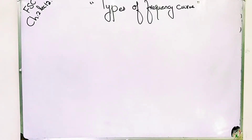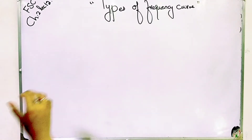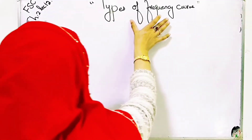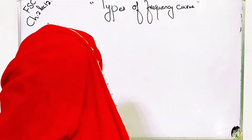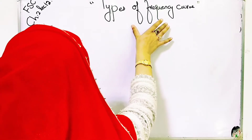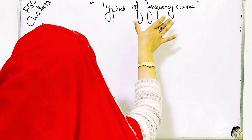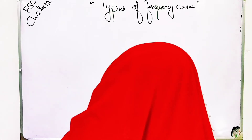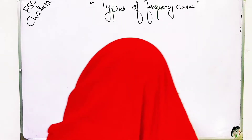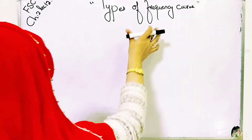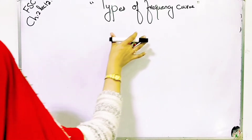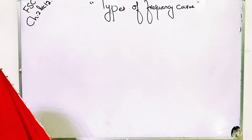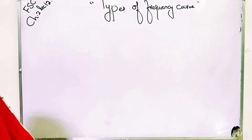In the name of Allah. Welcome students. In lecture number 12, we have the types of the frequency curve. These are the most important types. We will describe how many types of frequency curves there are. The frequency distribution occurring in practice usually belongs to one of the following four types.